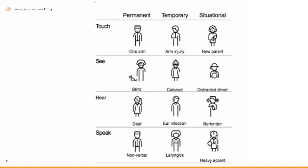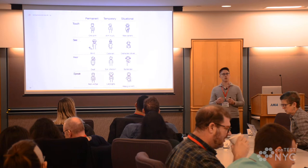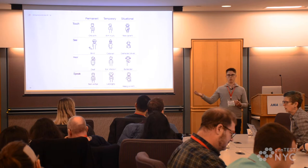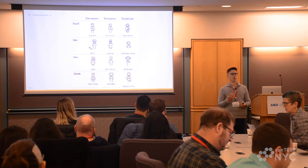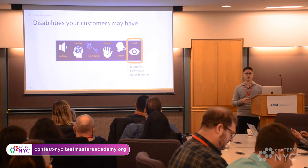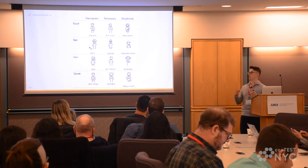Take the second row, for example. A permanent disability could be someone that's blind. A temporary disability could be someone that has a cataract, or just had laser eye surgery and may be out of work for a week. And a situational disability could be a distracted driver — maybe there's glare on the windshield and they're having difficulty seeing at that moment. Quality assurance engineers are very customer obsessed. By making things accessible, it helps everyone — the person who is blind, the distracted driver, or someone at a bar trying to watch the game with closed captioning. This is called inclusive design.